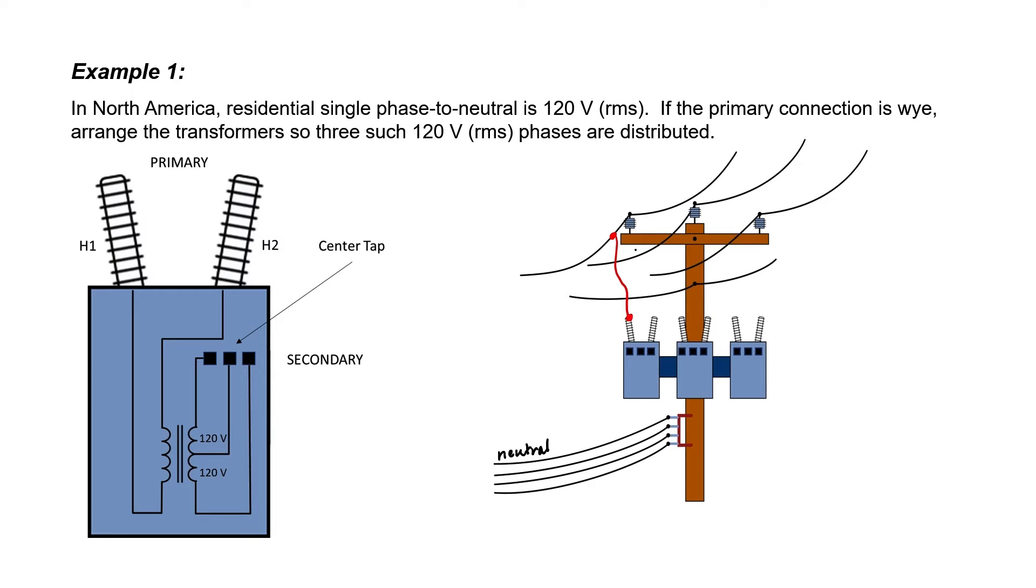One phase will connect to the bushing on one transformer. One phase will connect to primary bushing on another transformer, and likewise for the third transformer. Our secondaries will be connected to the star point and the neutral wire.